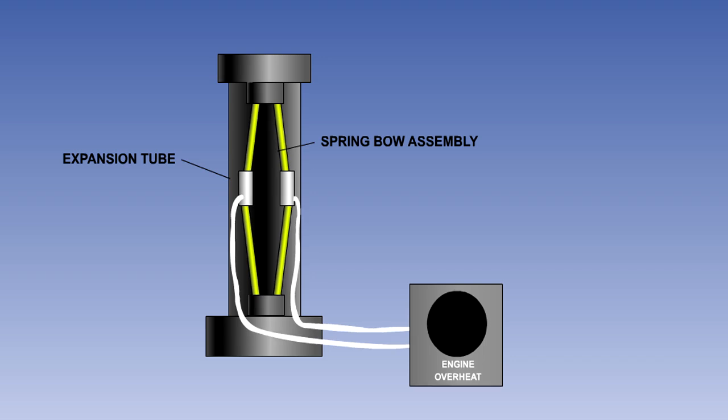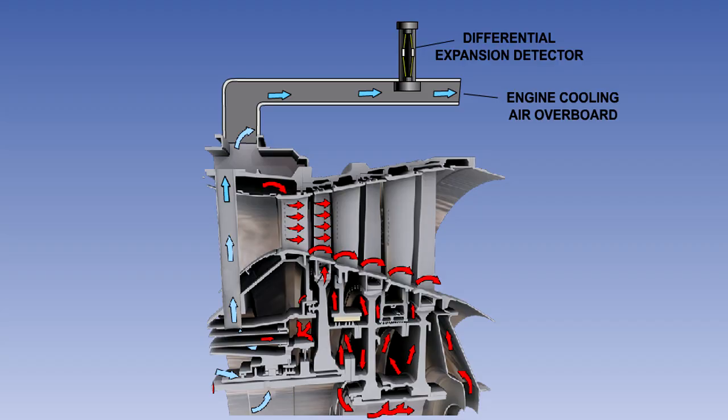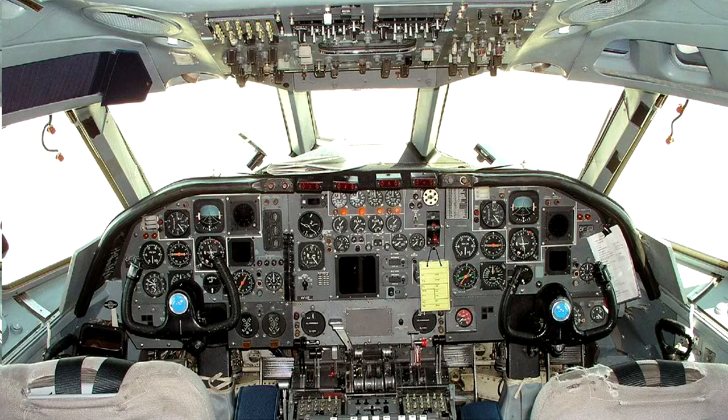This type of detector usually incorporates a short time delay before the warning is activated to prevent false warnings due to vibration. Differential expansion detectors are often used to monitor engine cooling air outlets in order to provide internal engine overheat warning. In the event of this warning being given, the pilots will normally be required to shut down the engine.